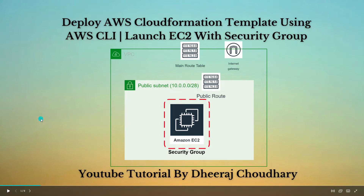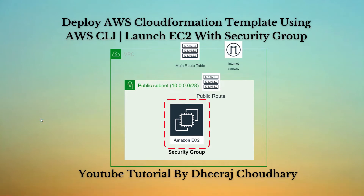Welcome back to the channel. In today's tutorial we are going to create an Amazon EC2 instance, create a security group, and associate that security group with the EC2 instance. Looking at the architecture, we have our VPC and public subnet, and within that public subnet we are going to launch our EC2 instance.